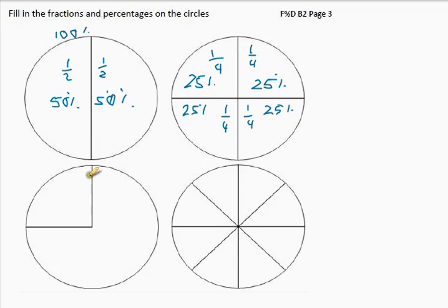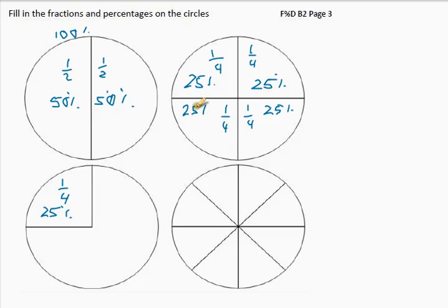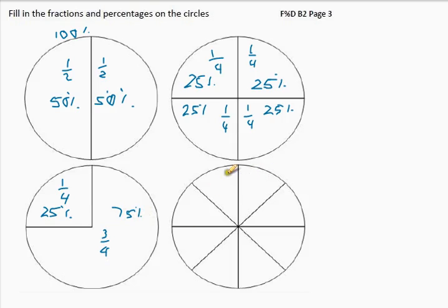Let's look at that one. It is 1 quarter or 25%. Now the rest here is those 3 added up — in other words, 75% or 3 quarters. Now, what do we have here? We have 8 parts.